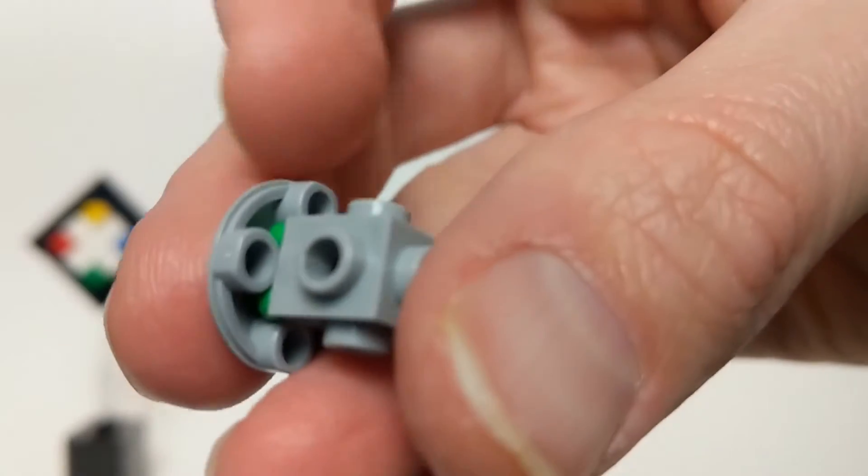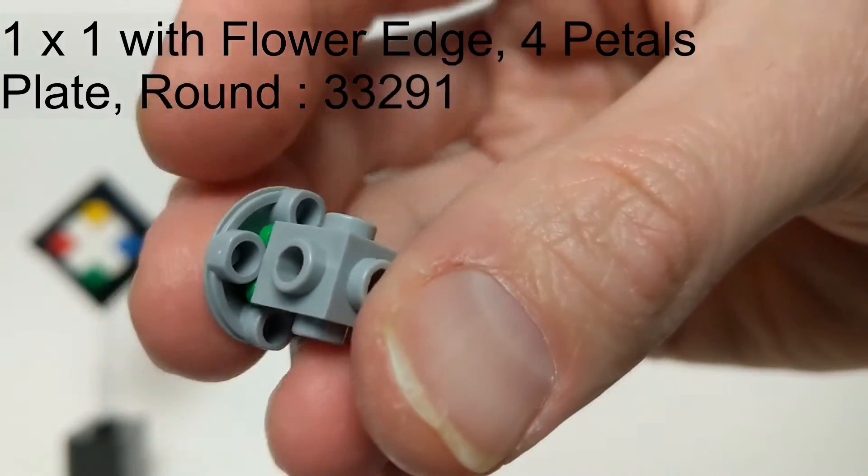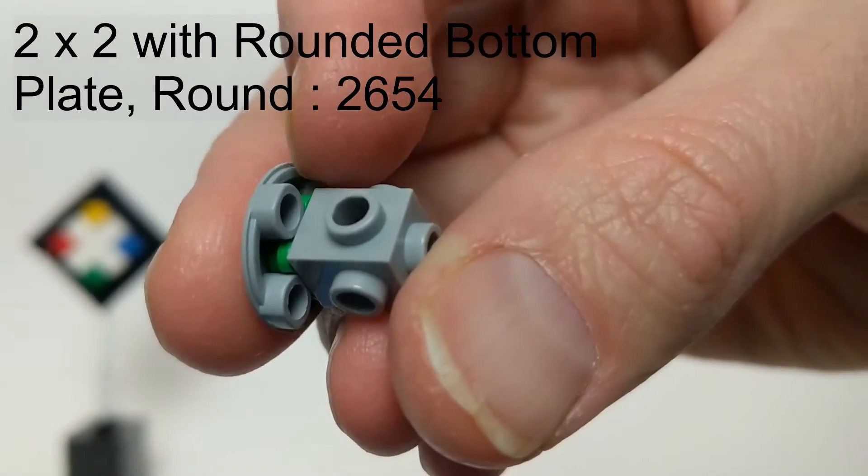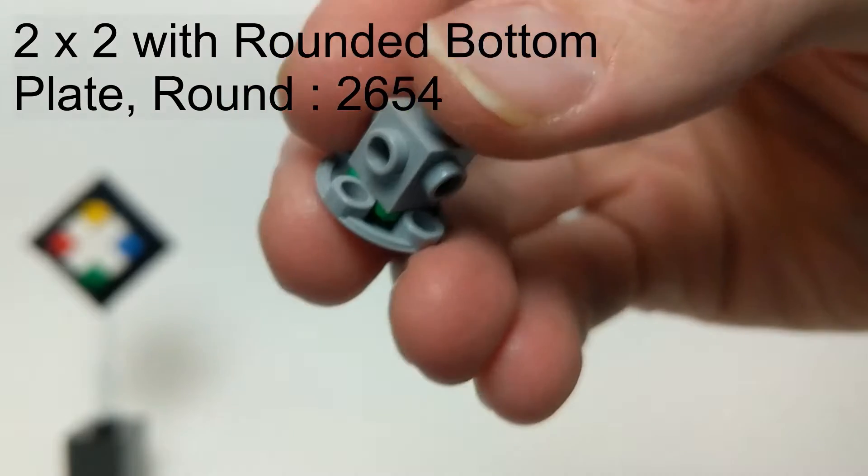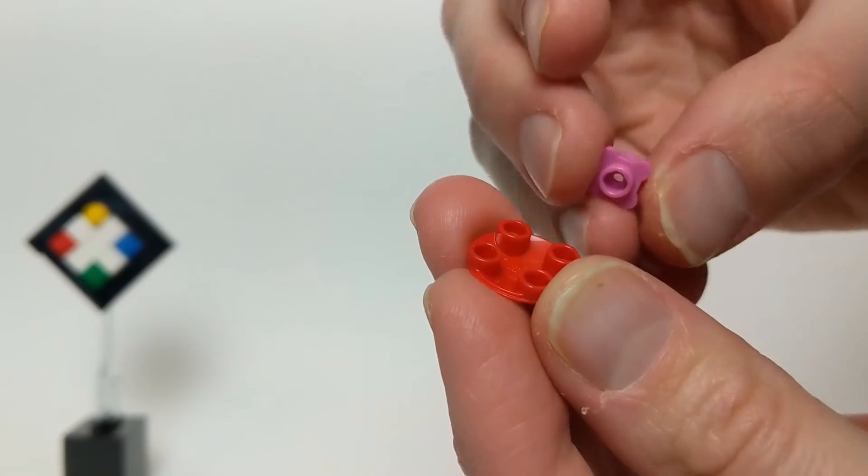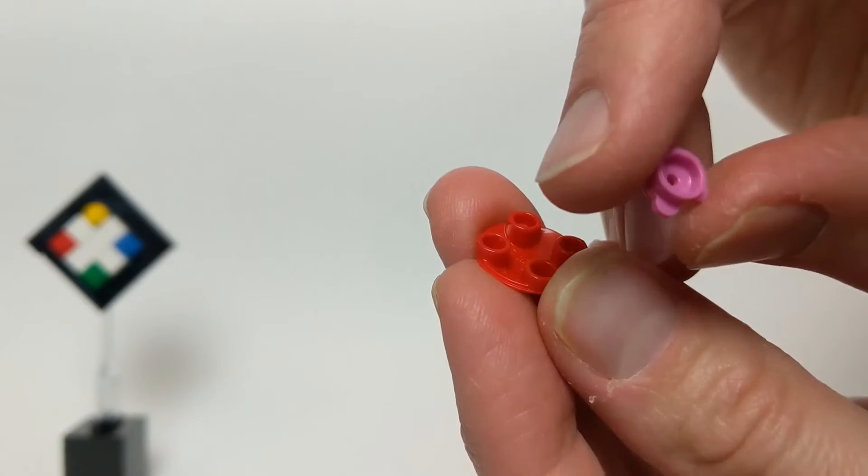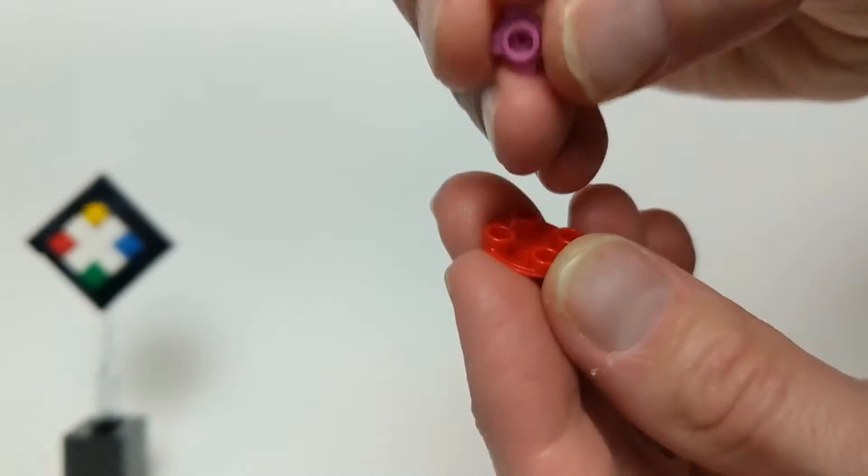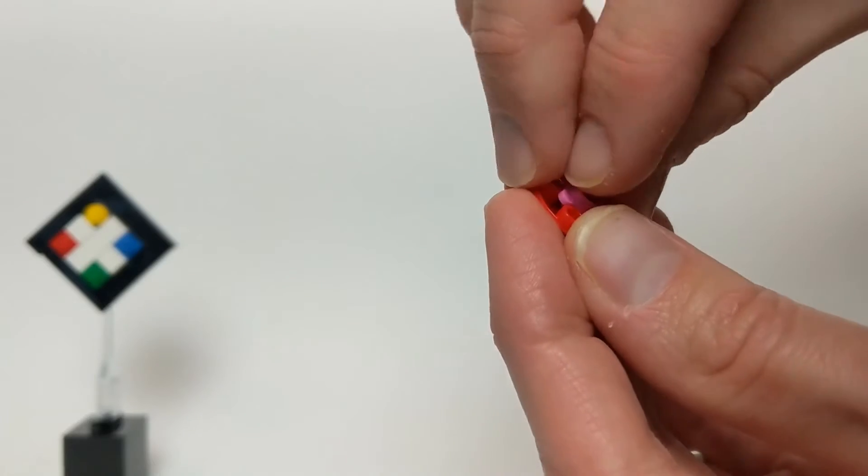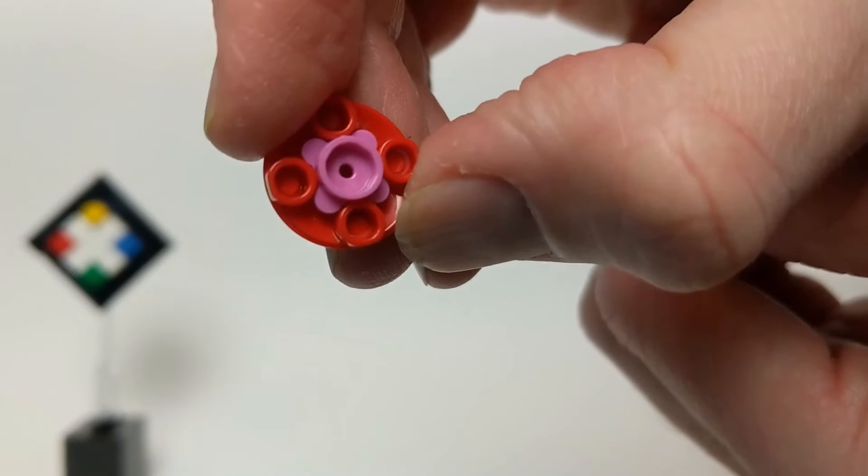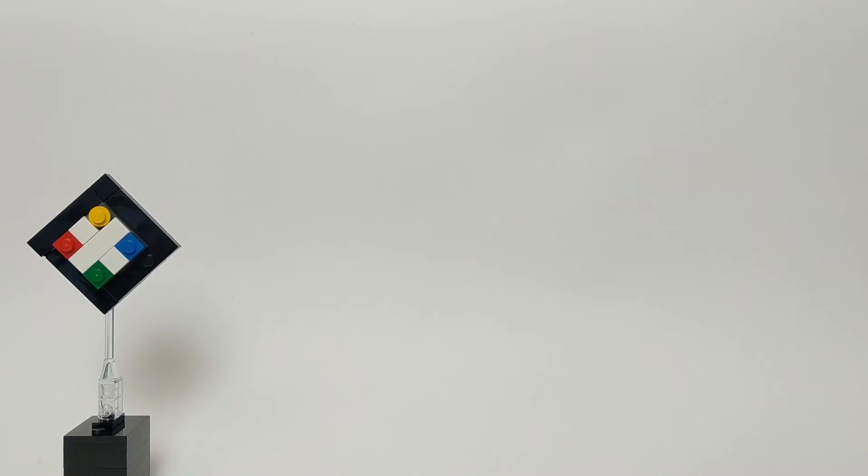It uses the flower elements and the inverted two by two round tile to connect to every single side of this Travis brick at the same time. The design of the flower element is critical to this technique. In particular, we are using the four petaled element. And these petal pieces can actually fit between the studs and slide right down in there.